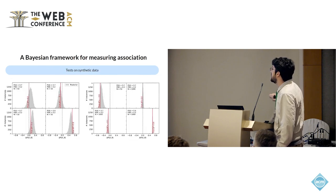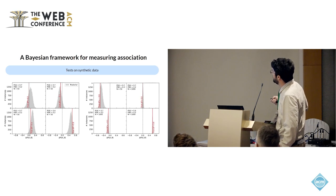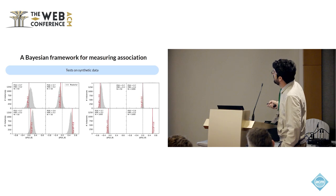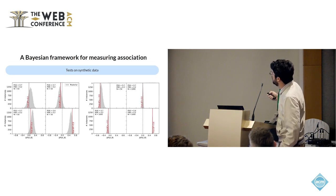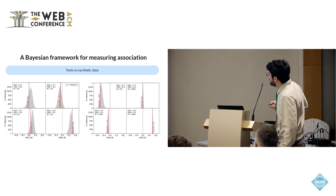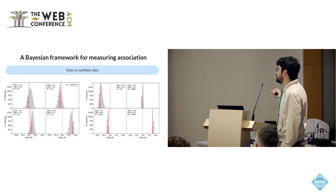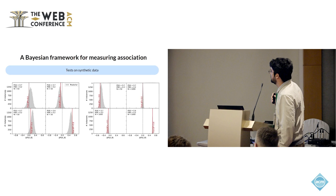The method was validated on synthetic data by creating random variables A and B with given true probabilities and a given sample size. The red line shows the true probability boost — the added value — and you can see the true value always falls within the estimated distribution. The distribution, although not very different from a Gaussian, is visibly asymmetrical. Z-tests assume an underlying Gaussian distribution, which is why this Bayesian approach is the best way to handle this.